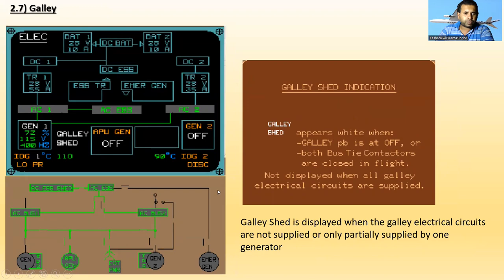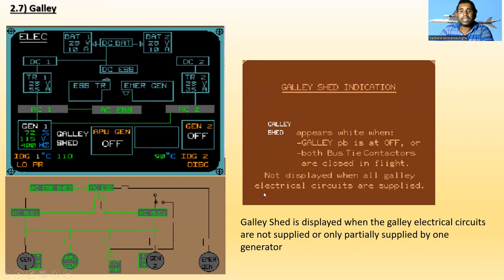Next is the galley shed indication. Galley shed appears white when the galley push button is at OFF or both bus tie contactors are closed in flight. It is not displayed when all galley electrical circuits are supplied. Galley shed is displayed when the galley electrical circuit is not supplied, or only part is supplied by one generator.